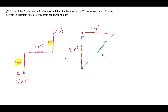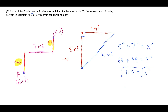We'll call the hypotenuse x. Using the Pythagorean theorem: 8 squared plus 7 squared equals x squared. So 64 plus 49 equals x squared, meaning 113 equals x squared. Therefore x equals the square root of 113, and rounding to the nearest tenth, that's approximately 10.6. So to the nearest tenth of a mile, Katrina is 10.6 miles from her starting point in a straight line.